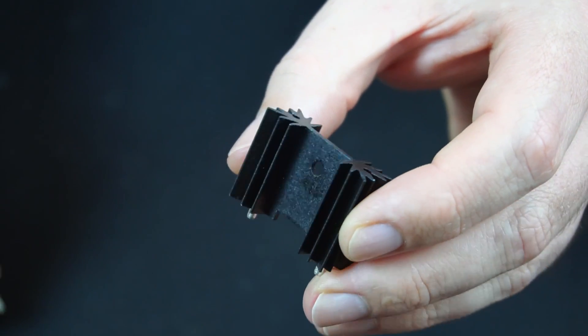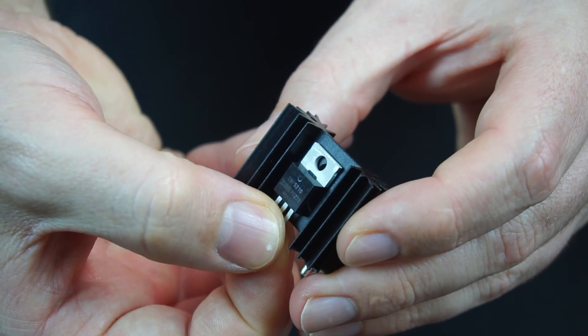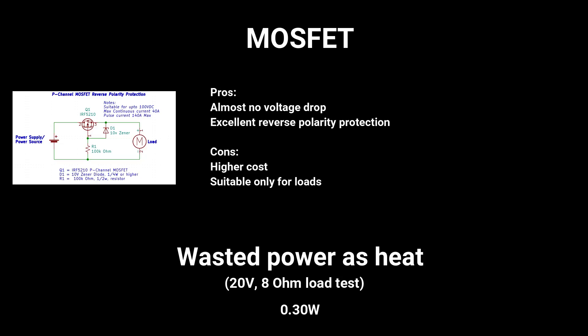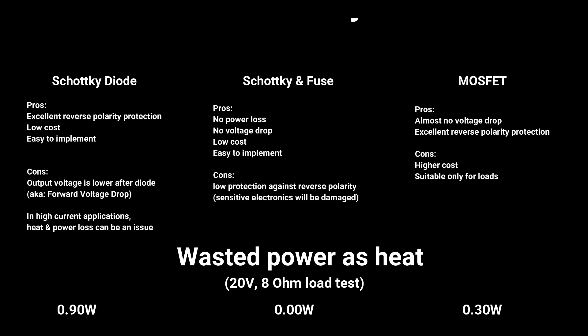So this type of reverse polarity protection should only be used for loads. As power sources like this battery defeat the reverse polarity protection the MOSFET usually offers in this application. Also consider adding a heatsink in high current applications to keep the MOSFET below its maximum operating temperature. The advantages of using a MOSFET is there is almost no voltage drop. Excellent reverse polarity protection. But it does have a higher cost. And is suitable only for loads. Here is a summary of all the methods used. Pause the video if needed.